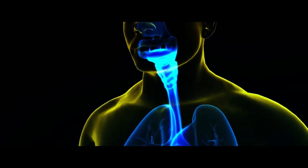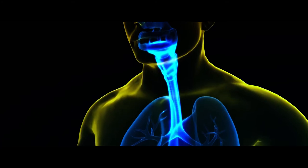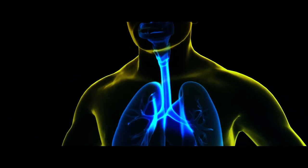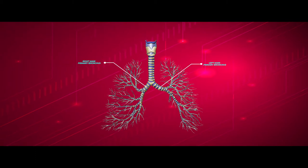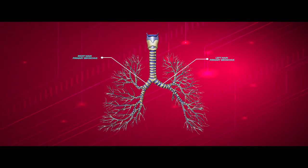From the larynx, air travels through the trachea which later divides into right and left primary bronchi. The primary bronchi divides into smaller secondary bronchi.